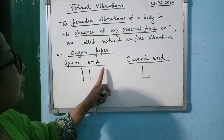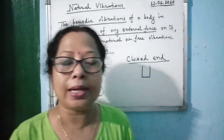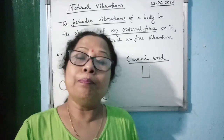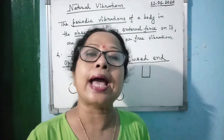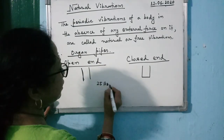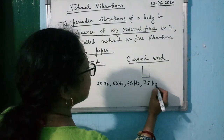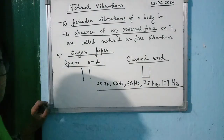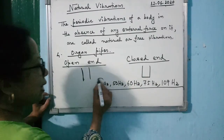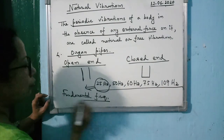In the sound produced by an open-end or closed-end organ pipe, different frequencies are present. For example, an organ pipe might produce frequencies of 25 Hz, 50 Hz, 60 Hz, 75 Hz, and 100 Hz. Out of all the frequencies present, the minimum frequency is known as the fundamental frequency.